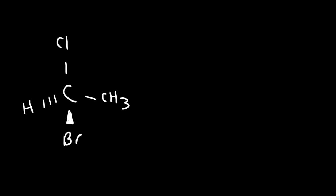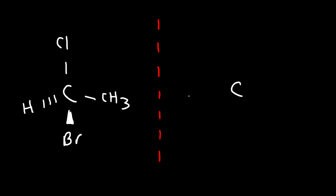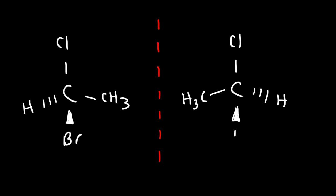So this molecule has an enantiomer. For any type of molecule that has one chiral center, it's going to have one enantiomer. To draw the enantiomer of this molecule, we need to draw the mirror image of it. The red line represents a mirror. Here's the carbon atom — we have a CH3, a hydrogen atom in the back, a chlorine atom at the top, and a bromine atom at the wedge. That's how you draw the enantiomer: simply draw the mirror image of the molecule.